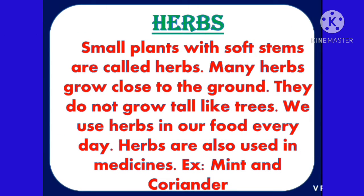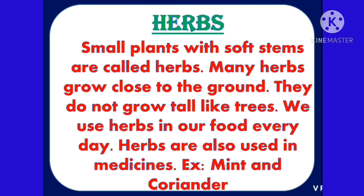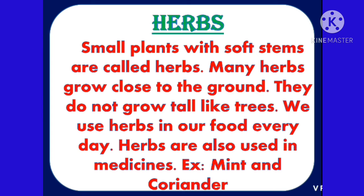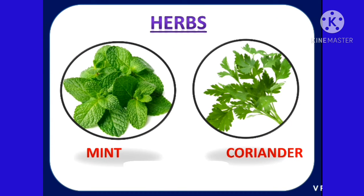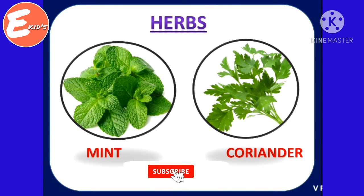Herbs. Small plants with soft stem are called herbs. Many herbs grow close to the ground. They do not grow tall like trees. We use herbs in our food everyday. Herbs are also used in medicines. For example, mint and coriander.